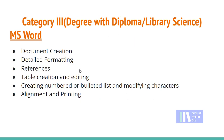This is category 3. MS Word, Excel, and PowerPoint are slightly similar to category 2, but with some differences. Category 3 covers: document creation, detail formatting, reference and table creation and editing, creating numbered and bulleted lists, modifying characters, and alignment and printing.